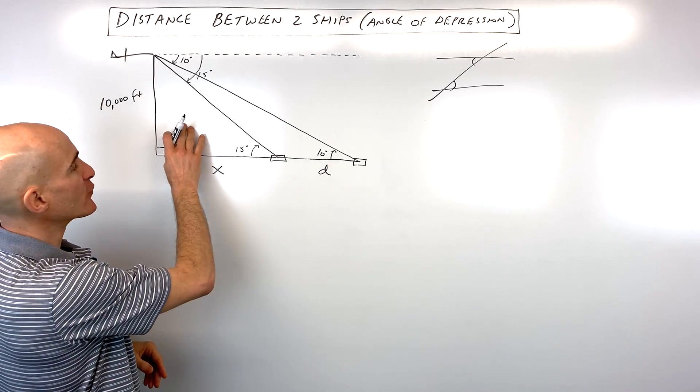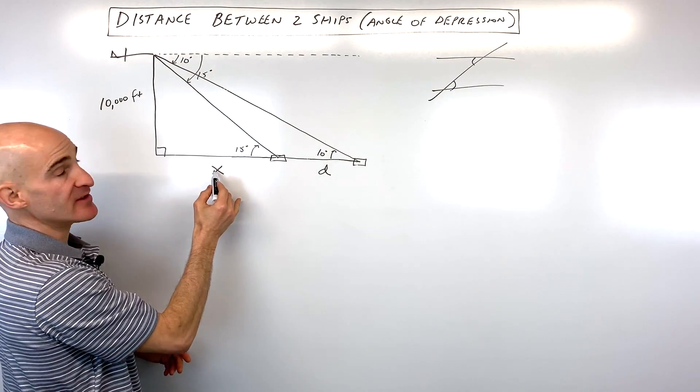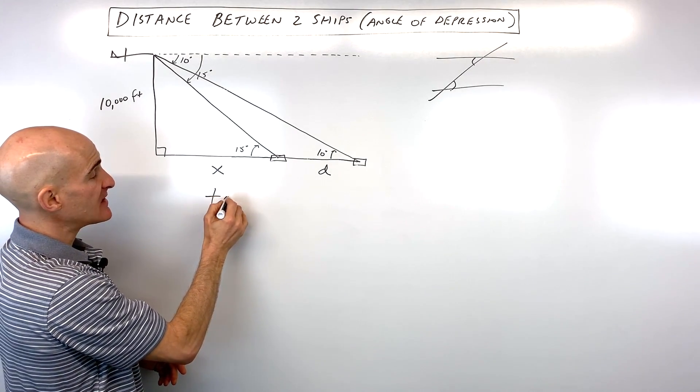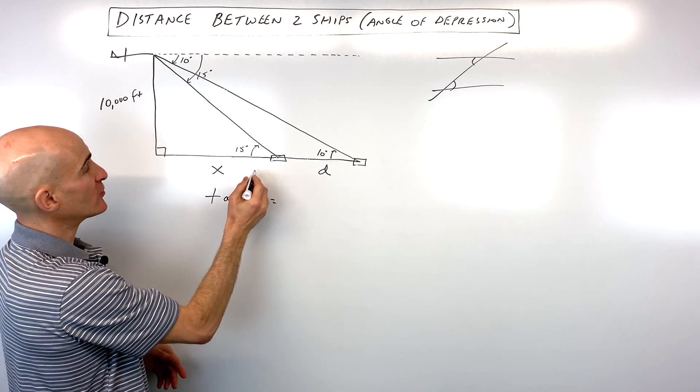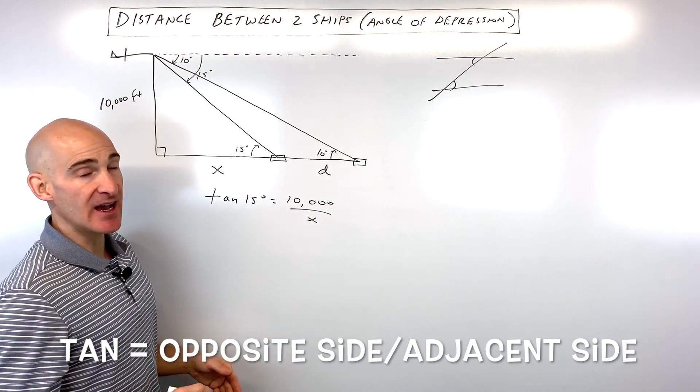Let's start with this little triangle here first. What trig function ties together this angle, this side, and this side? Well that's going to be the tangent because the tangent is equal to the ratio of the opposite side over the adjacent side.